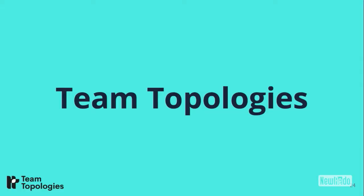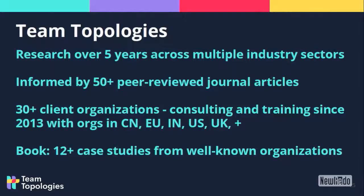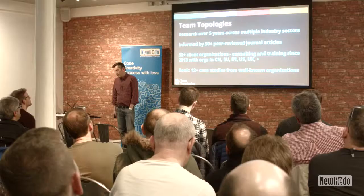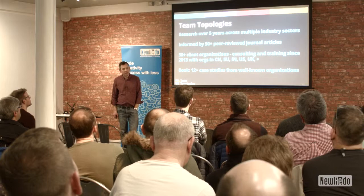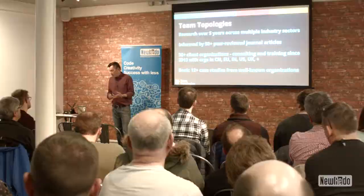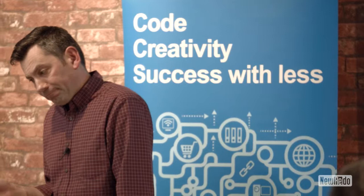I'll talk a little bit about the book Team Topologies, which is based on research we've been doing for just over five years across lots of different industry sectors. I go into organizations and work with people from CEO and CTO level down to developers and engineers to try and improve the effectiveness of software delivery. We've worked with companies based in China, EU, India, UK, and the US, and done quite a bit of research into peer-reviewed academic articles with good statistical significance.